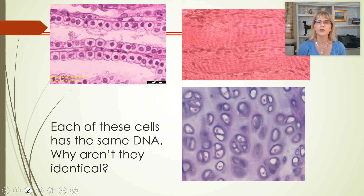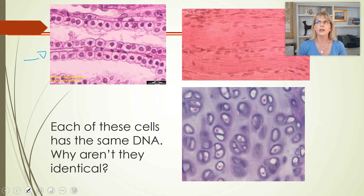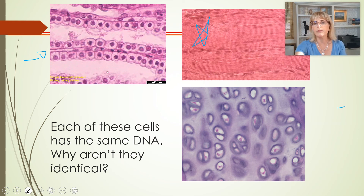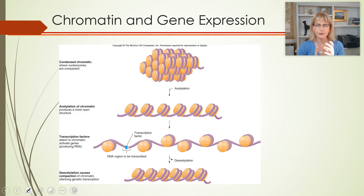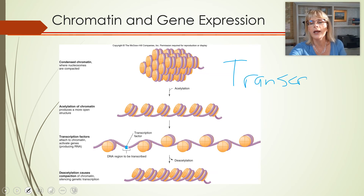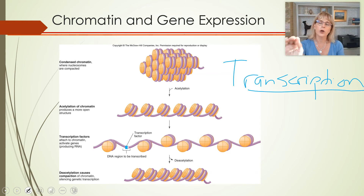All of these cells have the same DNA, but they're not identical. You should recognize these as simple cuboidal epithelial cells from the urinary tubules, skeletal muscle cells, and chondrocytes in hyaline cartilage. They're super different despite sharing the same DNA, and that is because of transcriptional regulation — which genes get transcribed determines which messenger RNAs and therefore which proteins get made.